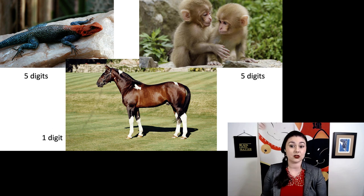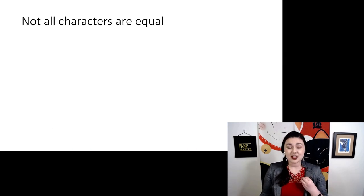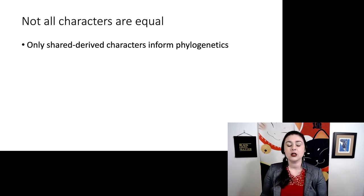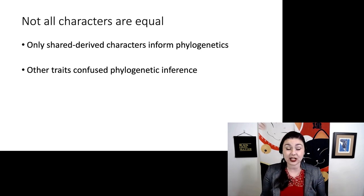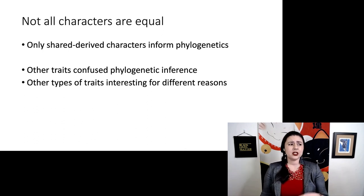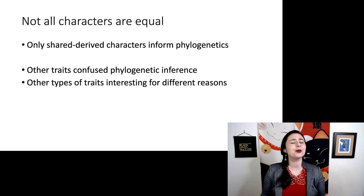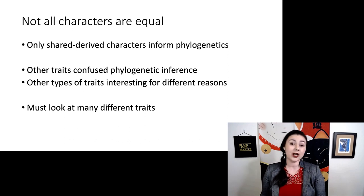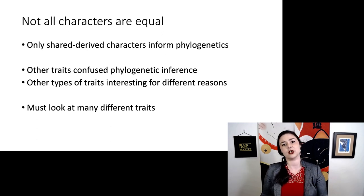Not all characters are equal, and it really depends on what you're looking at. When trying to figure out evolutionary history, only shared derived characters are helpful — other traits actually confuse your answer, like that example we just looked at. So whenever we are trying to figure out how different animals are related, we have to look at many different traits. Because just looking at an animal, you don't know what is a shared derived character at first — you need to analyze a bunch of traits and then figure out which ones are those shared derived characters.